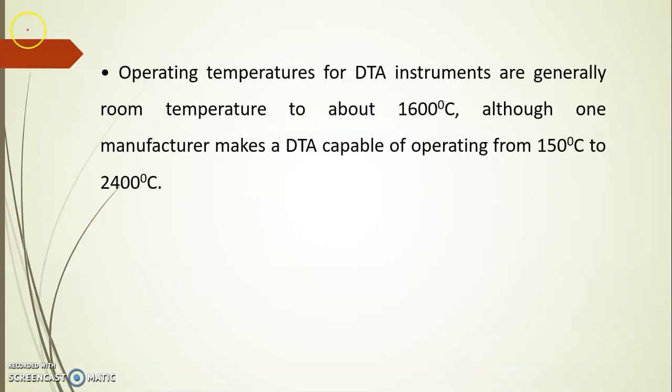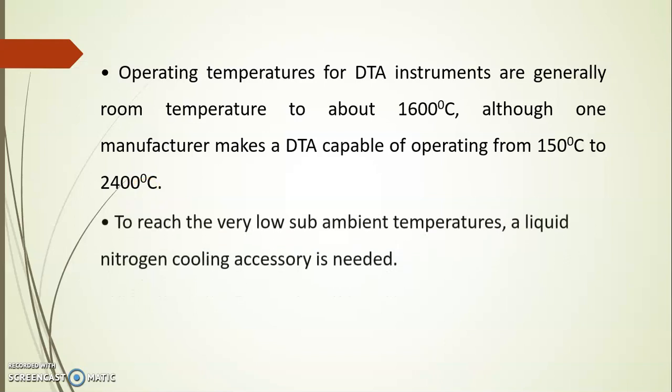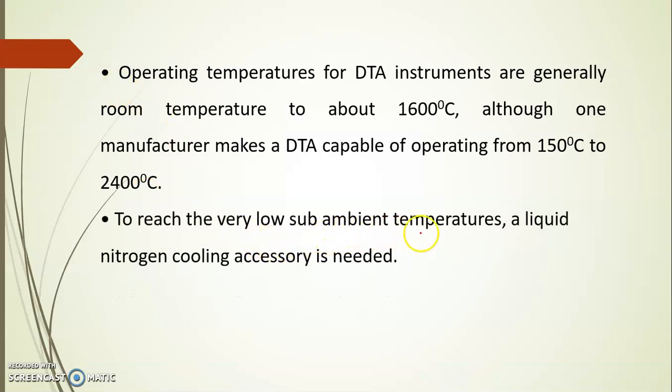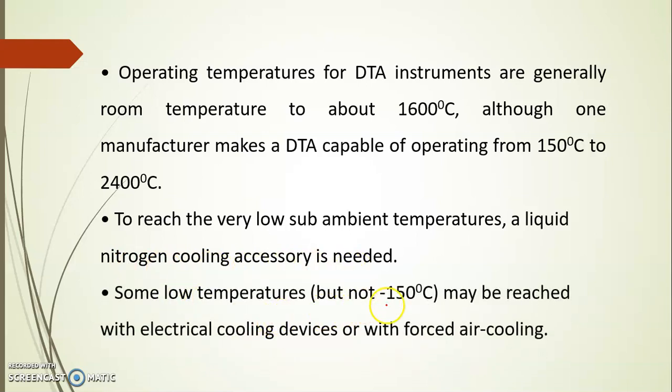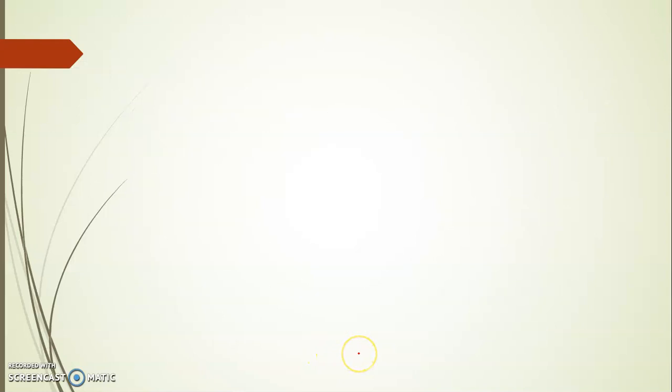Operating temperature for the DTA instruments are generally room temperature to about 1600 degrees Celsius, although one manufacturer makes a DTA capable of operating from -150 degrees Celsius to 2400 degrees Celsius. To reach very low sub-ambient temperatures, a liquid nitrogen cooling accessory is needed. Some low temperatures but not below -150 degrees Celsius may be reached with electrical cooling devices or with forced air cooling.